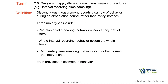Discontinuous measurement records a sample of behavior during an observation period rather than every instance. We take a long observation period — say 20 minutes — and break it into intervals, say 1-minute intervals, giving us 20 intervals as a sample of behavior. The three main types of discontinuous measurement are partial interval, whole interval, and momentary time sampling.